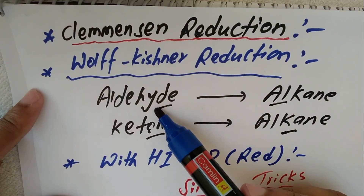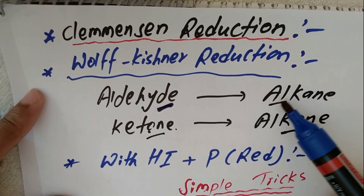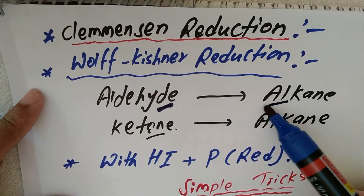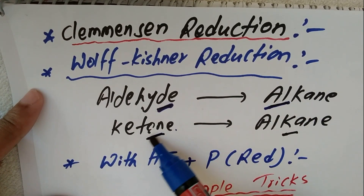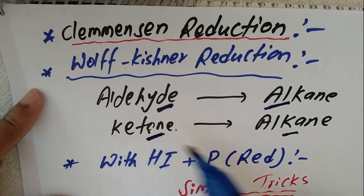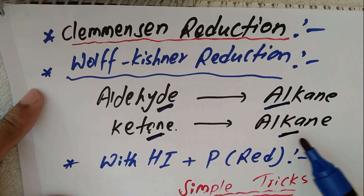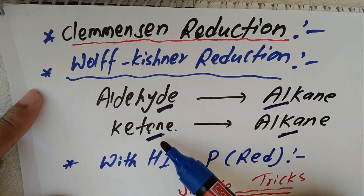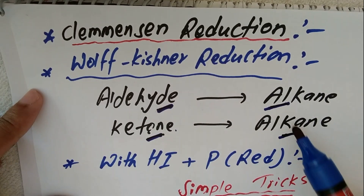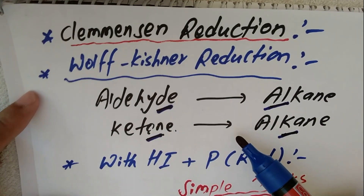If there are two carbons in the aldehyde, then the alkane also contains two carbons. If the ketone contains three carbons, then the alkane also contains three carbons. So, it is only the removal of oxygen from the aldehyde or ketone and addition of hydrogen — that is why it is called a reduction reaction.